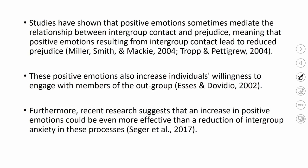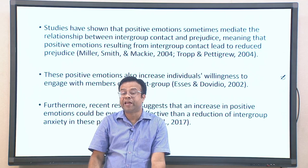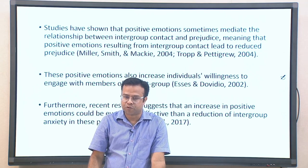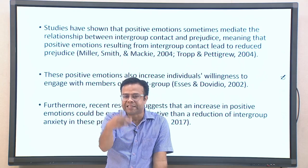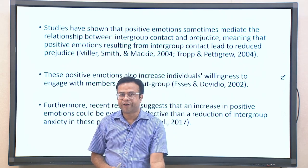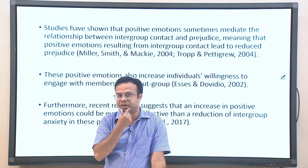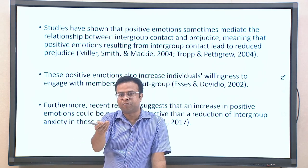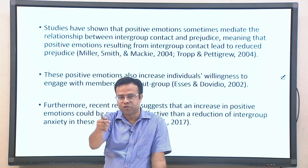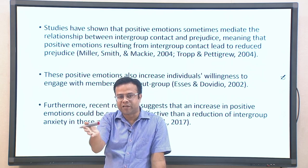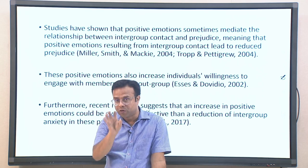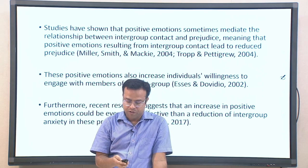Studies have shown that positive emotions can mediate the relationship between intergroup contact and prejudice — meaning positive emotions resulting from intergroup contact can lead to reduced prejudice. Since negative emotions cause prejudice, positive emotions can reduce it. Positive emotions also increase an individual's willingness to engage with out-group members and cooperate with them. Recent research also suggests that increasing positive emotions may be even more effective in reducing intergroup anxiety than directly trying to reduce that anxiety. Increasing positive emotion appears to be a better intervention strategy overall.